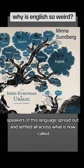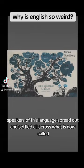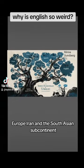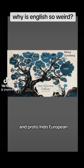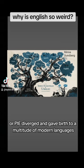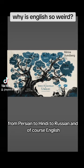which was probably spoken in the steppes of Western Asia around 8,000 years ago. Speakers of this language spread out and settled all across what is now called Europe, Iran, and the South Asian subcontinent, and Proto-Indo-European, or PIE, diverged and gave birth to a multitude of modern languages, from Persian to Hindi to Russian and, of course, English.